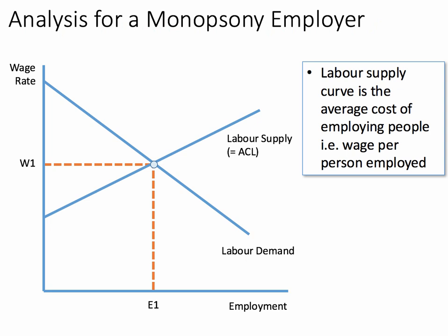Here's our starting point. It's a labour market where the labour supply curve is upward sloping and the labour demand curve is downward sloping.